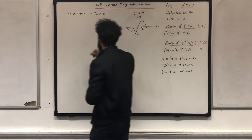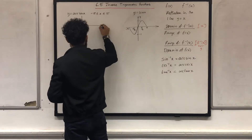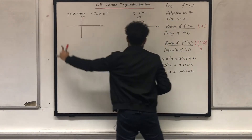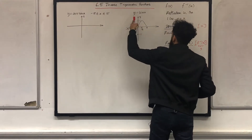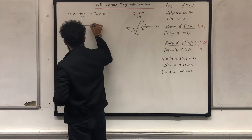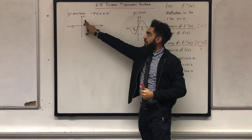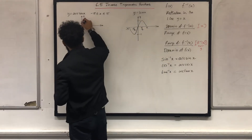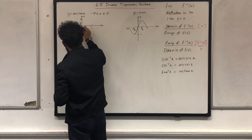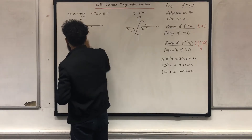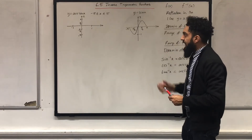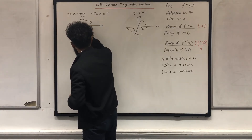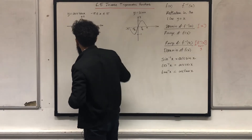Now I'm going to sketch y equals arcsin x. For y equals arcsin x, the domain will be the range of y equals sine x, so the domain will be minus 1 to 1. And the range of y equals arcsin x will just be the domain of y equals sine x, so we're looking at pi over 2, pi, and then minus pi over 2, minus pi. Now I can sketch my graph — the graph will look something like this.